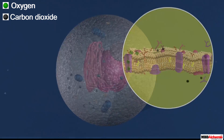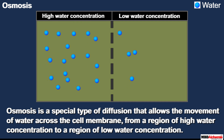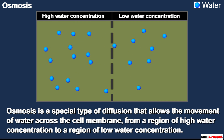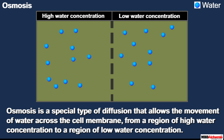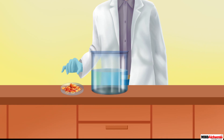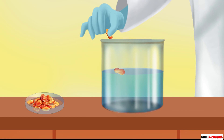Osmosis, on the other hand, is a special type of diffusion that allows the movement of water across the cell membrane from a region of high water concentration to a region of low water concentration. Let us understand the process of osmosis with the help of some activities. For this, let us take some dried raisins and put them in water filled in a container.